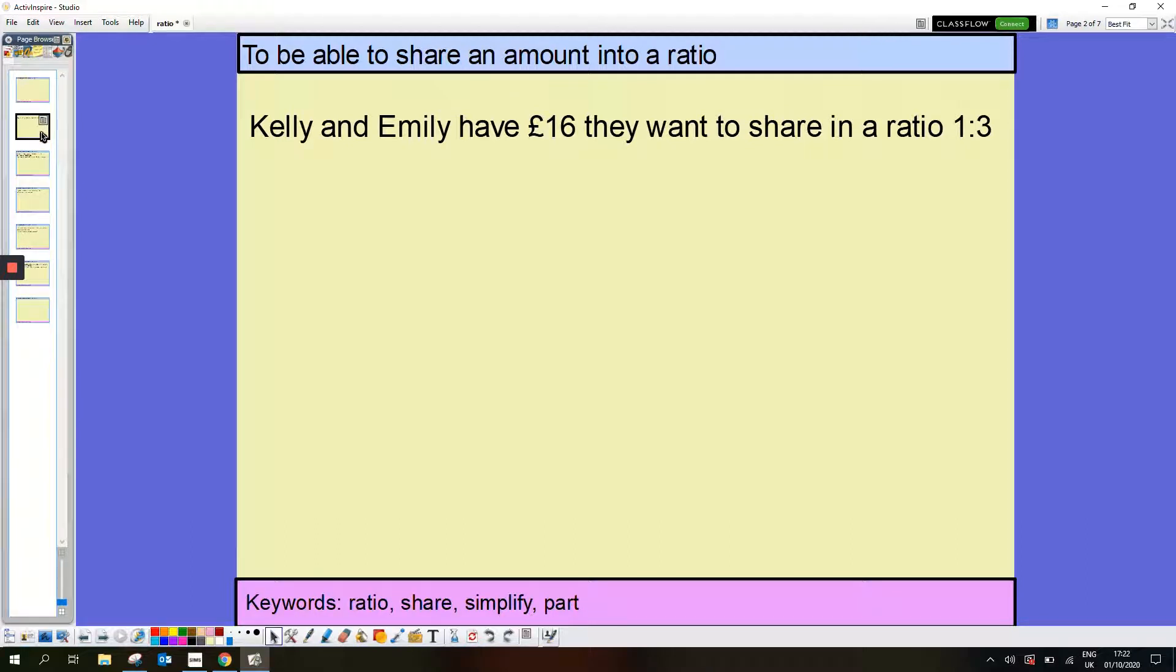Kelly and Emily have £16 they want to share in a ratio of 1 to 3. So my ratio is 1 to 3. Kelly gets 1, Emily gets 3 parts.